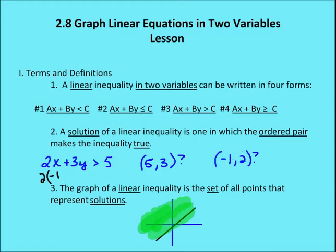The graph of a linear inequality is the set of all points that represent the solution. We've got not just one point typically, but lots and lots of points — we call those the set of points. I've graphed them here in green to show that everything on this side of the line is going to be a solution to the inequality.